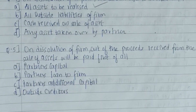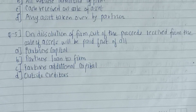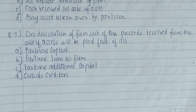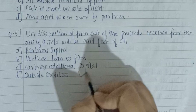Fifth question: on dissolution of a firm, out of the proceeds received from the sale of assets, who will be paid first — partner's capital, partner's loan, partner's additional capital, or outside creditors? It is very important to remember that the third party, that is the creditors, have to be paid first. So the answer is D — outside creditors.